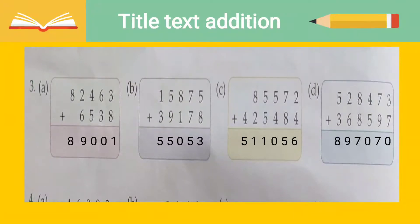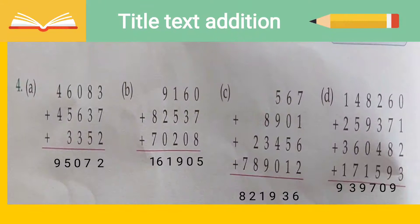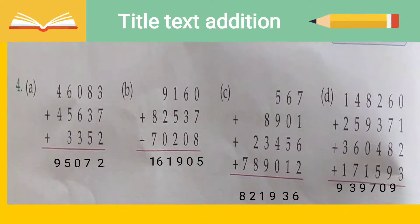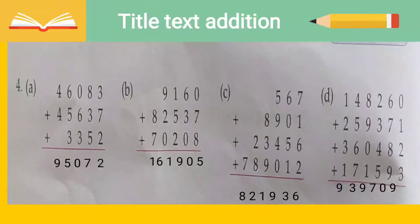Moving on to question four. Here, before we were adding just two numbers, but now we have three lines of addition. As you can see: 46,083, 45,637, and 33,52 — all three lines of digits we have to add together. This is not too difficult — simply add the digits, carry forward, and add the next digits. The method is the same. As you can see in the slide I have solved all the questions, so you can follow from here.